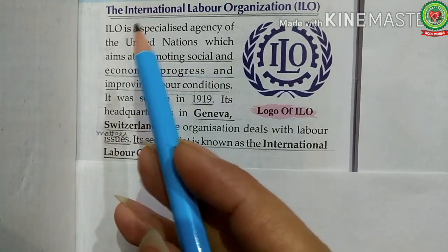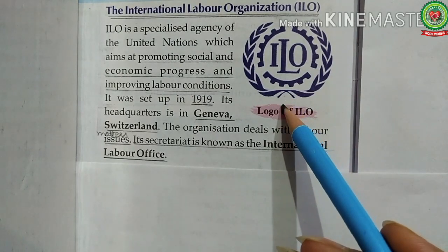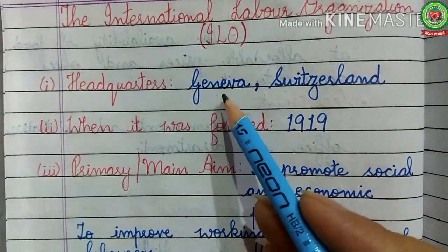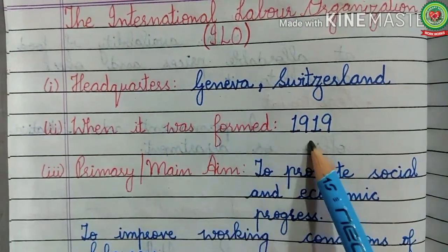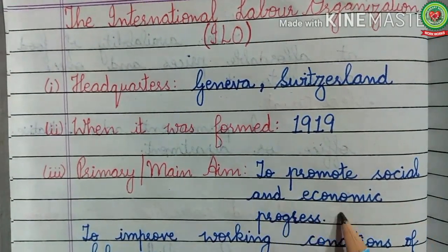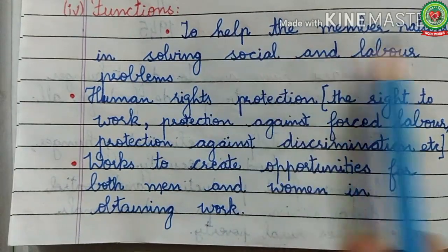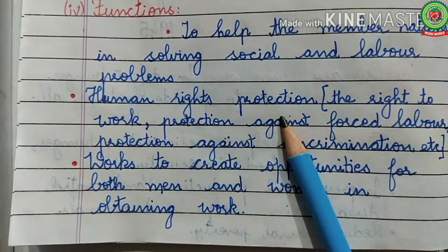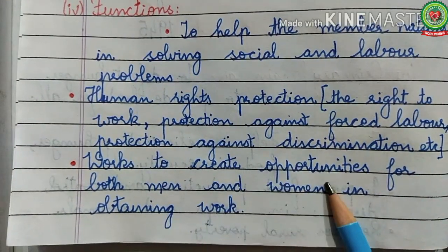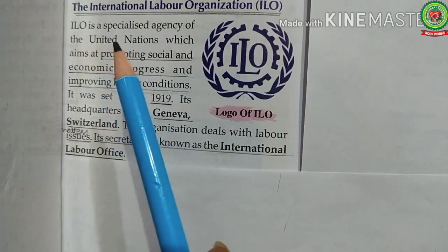The second agency of the United Nations is the International Labour Organization, ILO. This is the logo of ILO. The headquarters of ILO is located in Geneva, Switzerland. It was formed in 1919. The primary aim is to promote social and economic progress and to improve working conditions of laborers. The functions of ILO include helping member nations in solving social and labor problems, human rights protection — including the right to work, protection against forced labor, and protection against discrimination — and working to create opportunities for both men and women to obtain work.